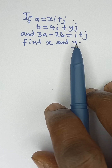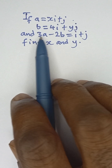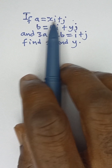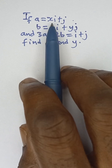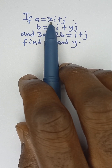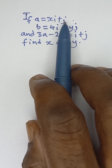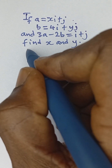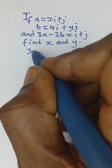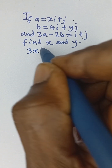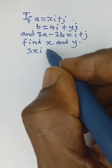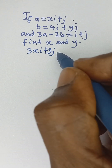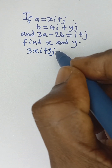Let's substitute values directly. 3a means multiplying vector a by 3, so it's going to be 3 multiplied by Xi, and then 3 multiplied by J, that will give us 3Xi plus 3J.